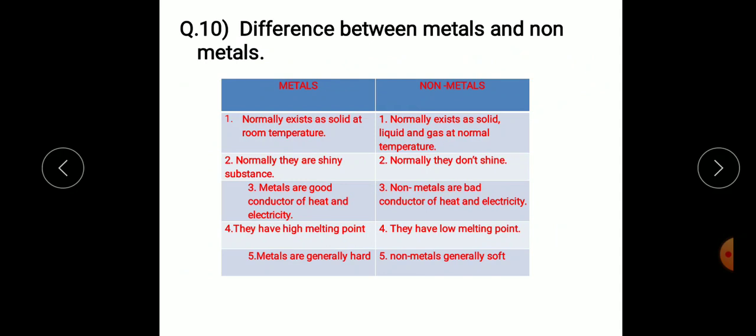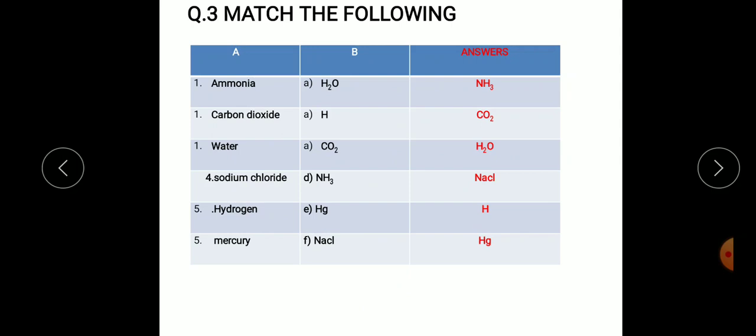Metals are good conductors of heat and electricity, but non-metals are bad conductors of heat and electricity. Metals have very high melting point, but non-metals have low melting point. Metals are generally hard, but non-metals are generally soft.